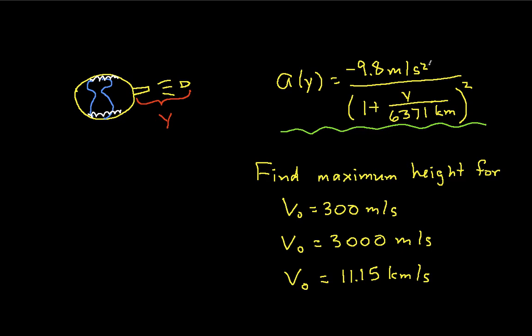Okay, so the relationship that we'll use to get the values that we want is the following. We have that the integral from our initial position to our final position of a(y) is equal to one-half times the velocity squared minus one-half times our initial velocity.